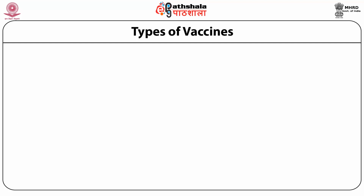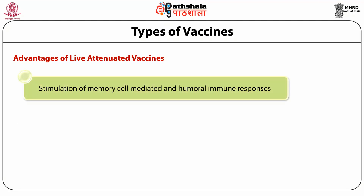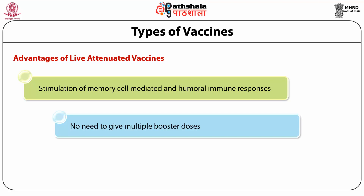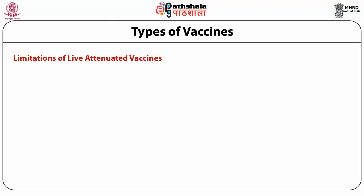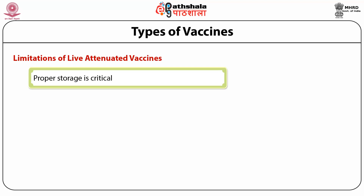The advantages of live attenuated vaccines include stimulation of memory, cell-mediated, and humoral immune responses, which is why multiple booster doses are not needed. These vaccines are quite effective. However, they require proper storage because they are effective only when the microorganism can replicate and produce the immune response; harsh conditions might inactivate the microorganism, making the vaccine ineffective.